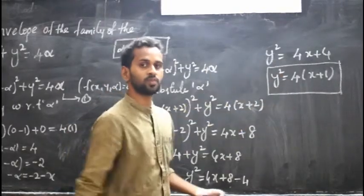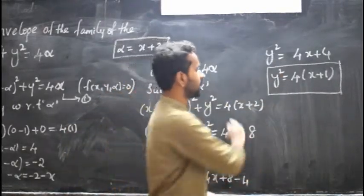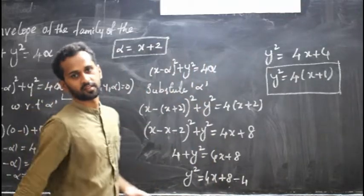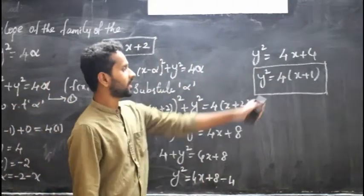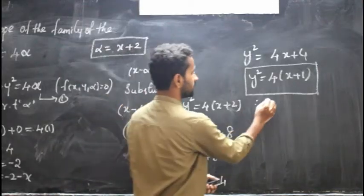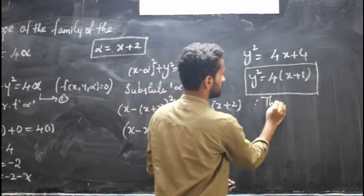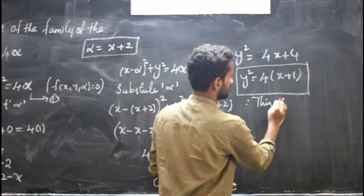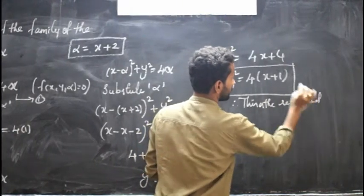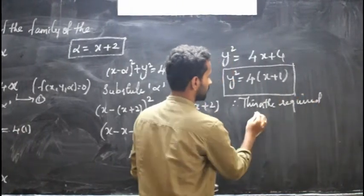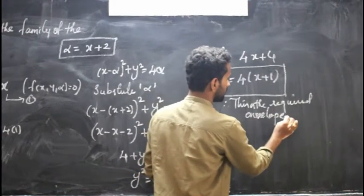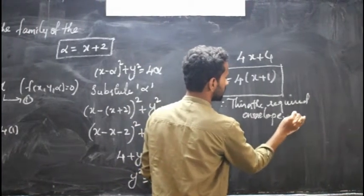Since I have eliminated all the parameters — alpha was the parameter and I have eliminated it — I have got my envelope of the given curve. Therefore, the required envelope is y squared equal to 4 into x plus 1.